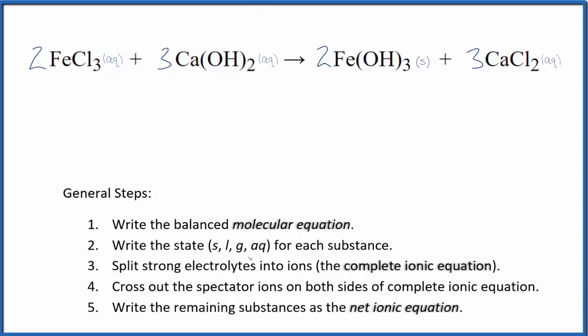Now that we have our states, we can split the strong electrolytes into ions for the complete ionic equation. Iron, we don't know that. It's a transition metal. But each chloride ion here is one minus. We have three of them. The iron is three plus. So we'll have our two iron three ions. And I won't write the states. Let's do that at the end. Plus two times three is six. So we'll have six chloride ions.